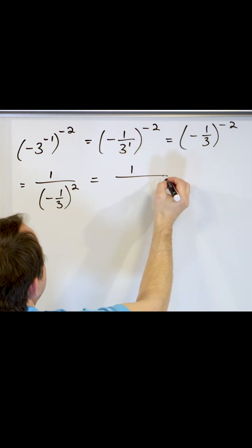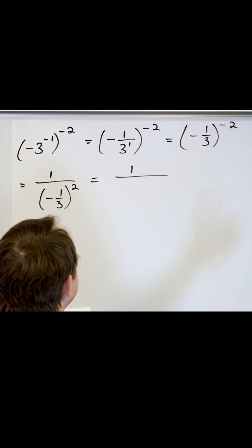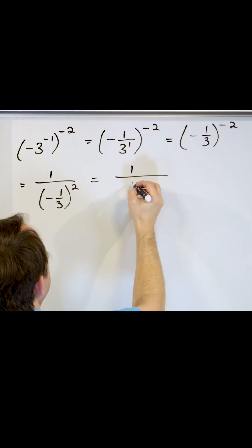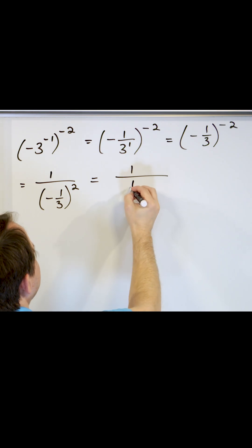Now, on the top stays the same. On the bottom, negative times negative is positive, and one third squared is one third times one third, which is one ninth.